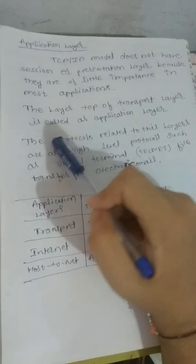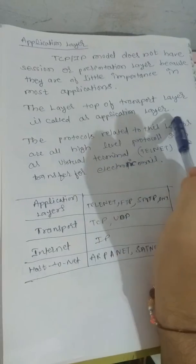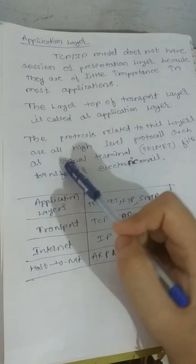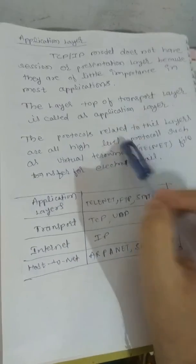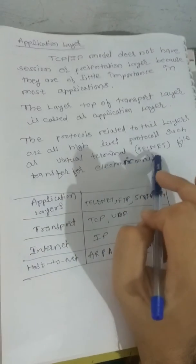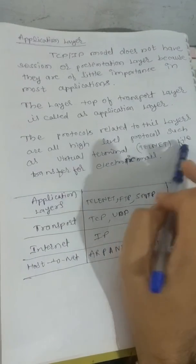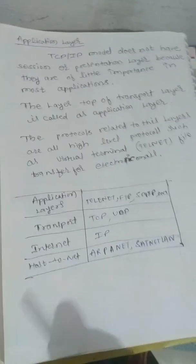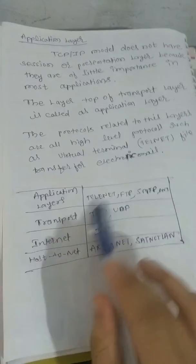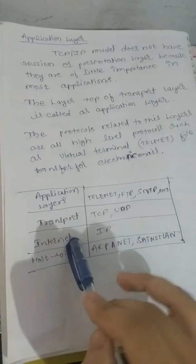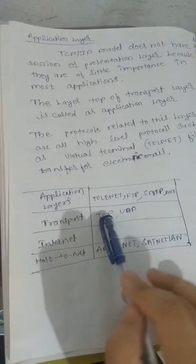The layer on top of the transport layer is called the application layer. The protocols related to this layer are called high-level protocols. Examples include Telnet, FTP for file transfer, SMTP for electronic mail, and DNS.